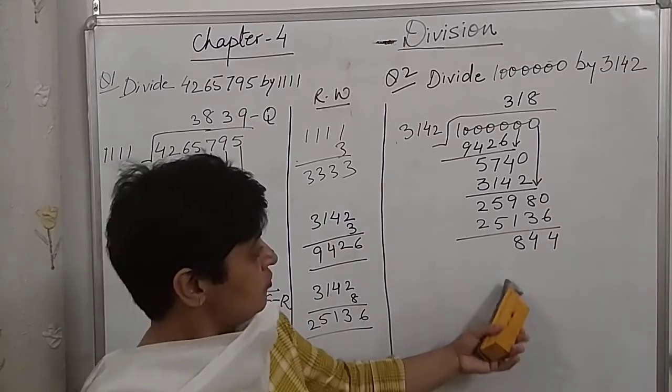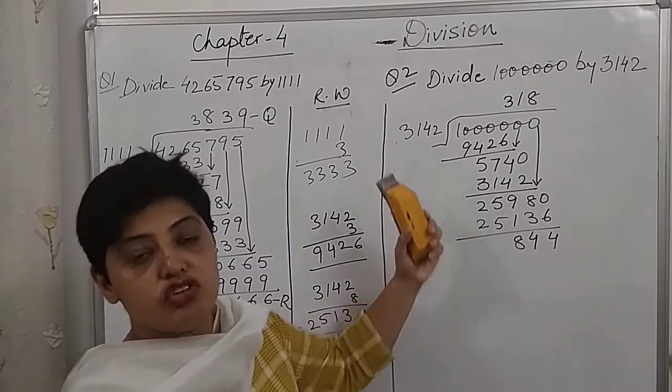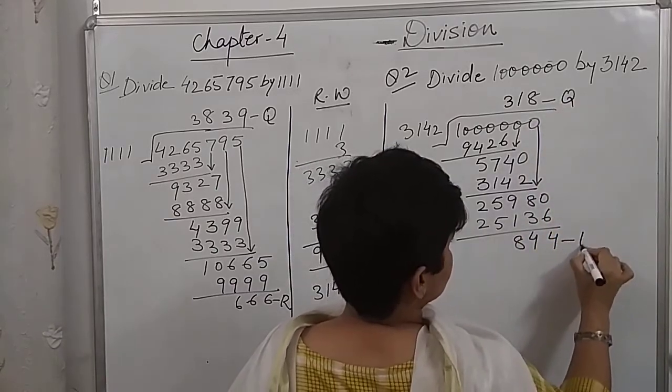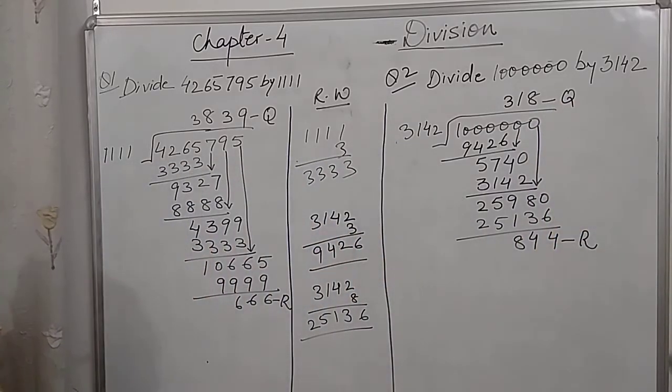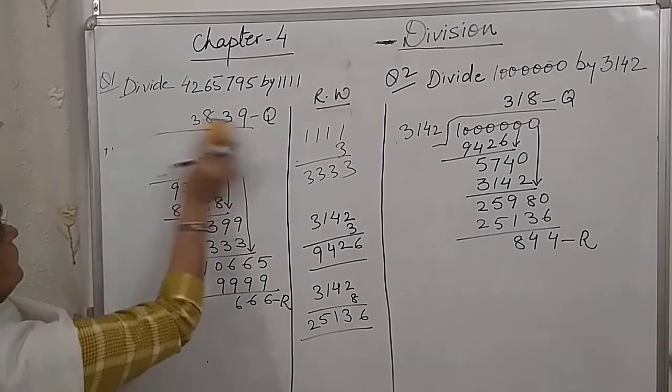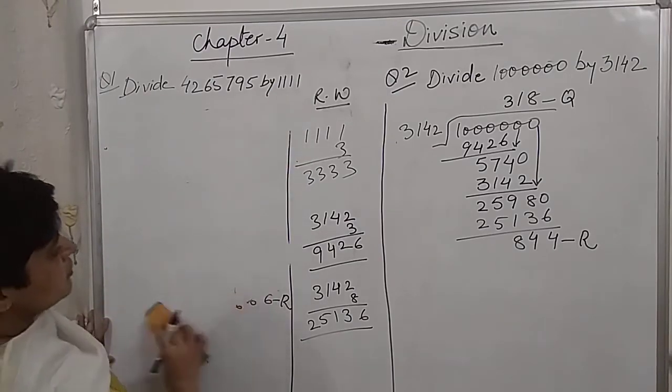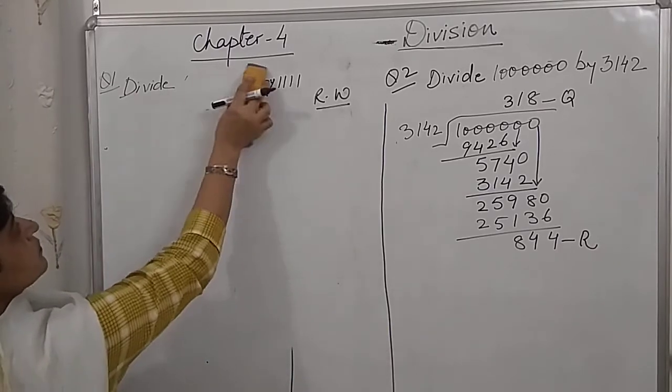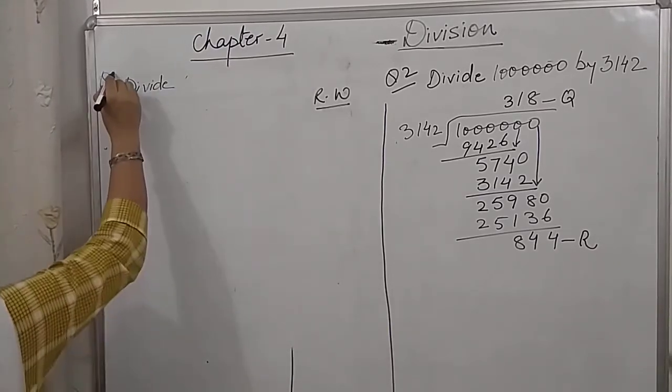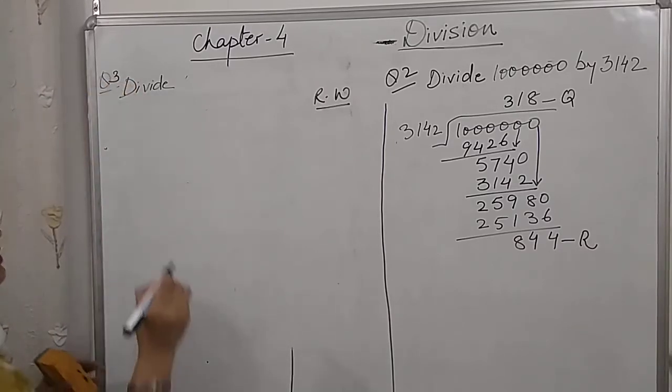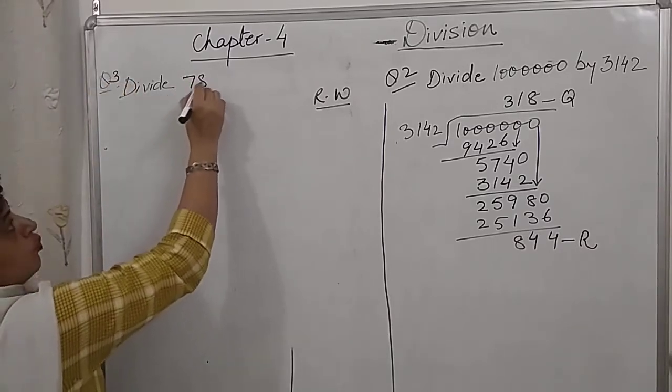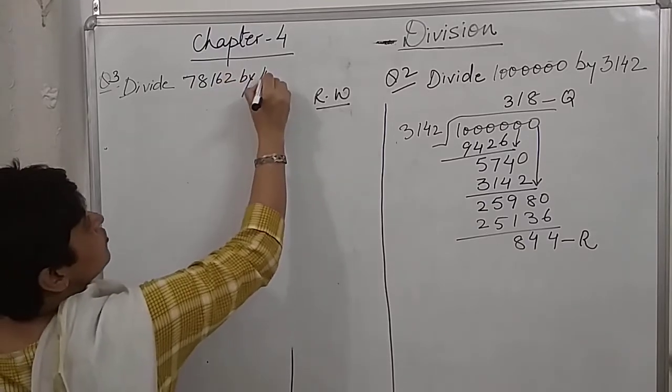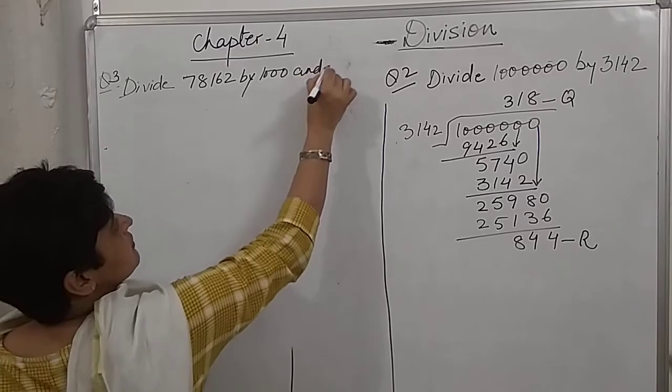So, remainder is smaller than the divisor and it should be. This is our quotient and this is our remainder. Now, let us do another sum. Now, question number 3. Divide 78162 by 1000 and check your answer.